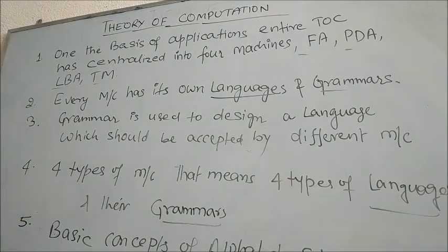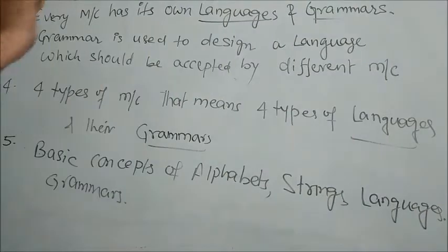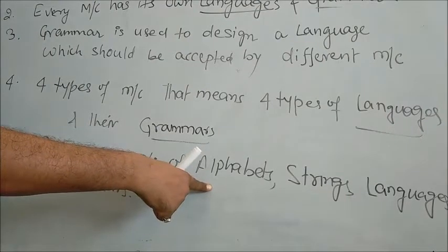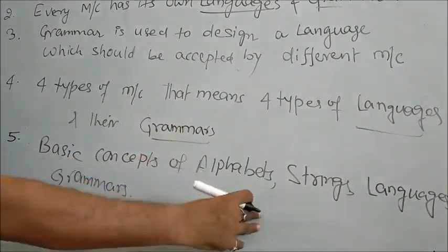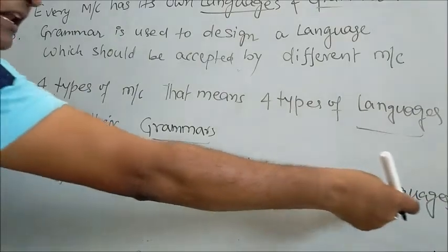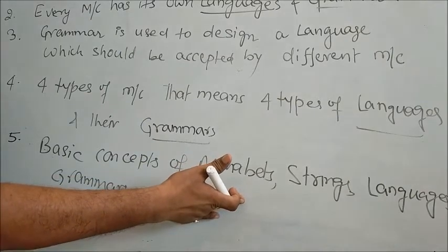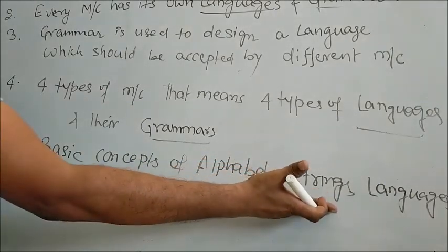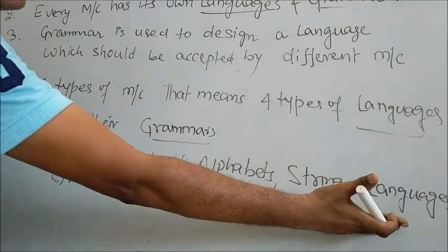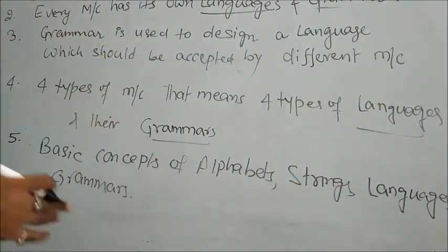To understand the basic concept of language and machine, we have to understand the concept of alphabets, which I will cover in the next lectures. On the basis of alphabets, we can create strings. On the basis of strings, languages are generated. These different languages are accepted by different machines.